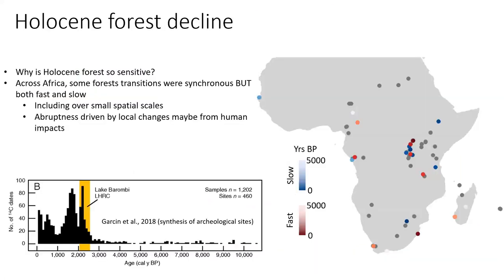There's still a lot of work being done to potentially attribute the increase in forest sensitivity in the late Holocene to human impacts. There is archaeological literature from the region showing a major increase in farming and Iron Age archaeological sites at this time, suggesting that fire as a disturbance mechanism — due to an increase in people in the area — might be driving some of the nonlinear, site-specific transitions from forest to more open environments across this interval.